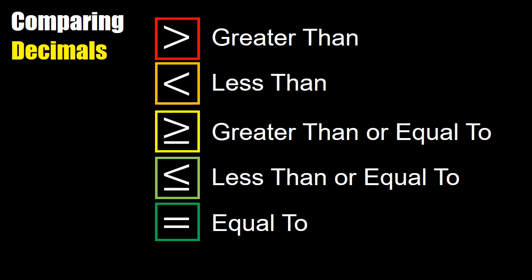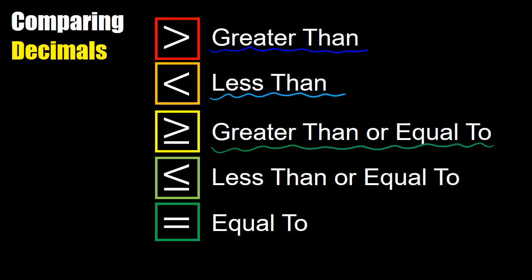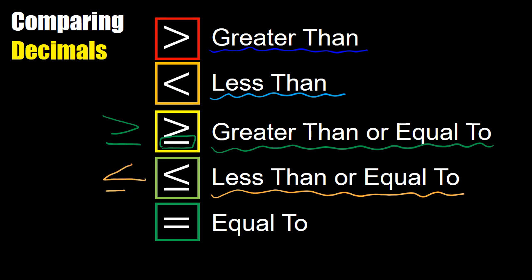In comparing decimals we have some different signs that you've been familiar with, but we're just going to review quickly. We have the greater than sign, the less than sign, the greater than or equal to sign — where the line underneath means equal to — and the less than or equal to sign, where the less than sign has a line underneath meaning less than or equal to.